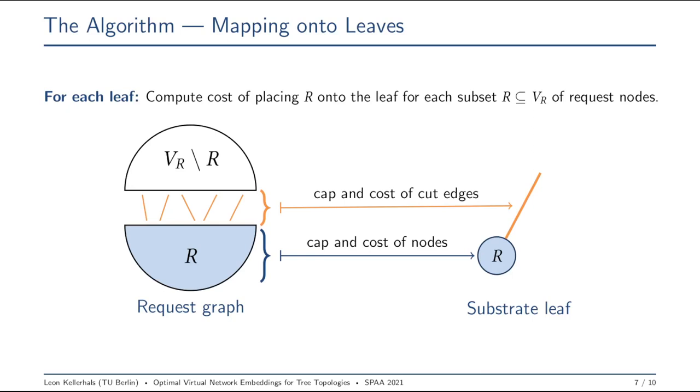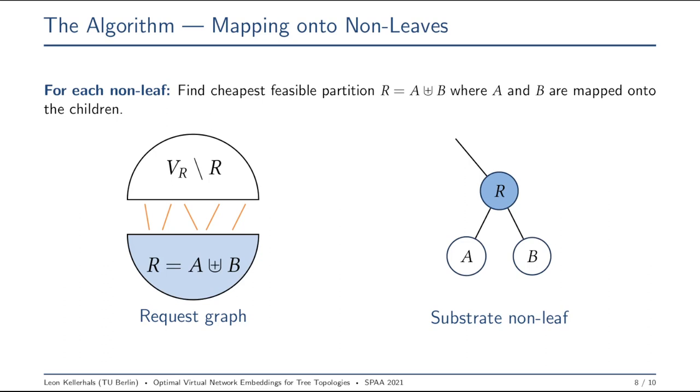Once we're done with this step, once we computed the cost to map every subset R onto every leaf, we can go a level up and compute the cost of mapping some subset R onto a non-leaf. Here we need to check every partition of R into two parts, A and B, and compute the cost of mapping A onto the left child and B onto the right child of our substrate node. As the remaining nodes of the request are going to be mapped outside of the substrate, these right here, any of the orange edges are going to be mapped onto paths that go through the orange edge of the substrate. Note that edges between A and B are not going through the orange edges as they are contained within R. Their path is going along the two black edges here within the substrate. But these costs we have already attributed for when we consider the substrate nodes on the level below.